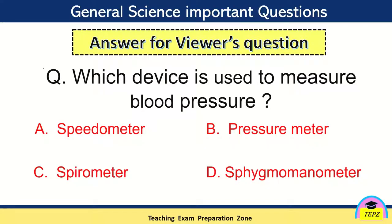Before that, we will see the answer for viewers' question which was asked in previous video. Which device is used to measure blood pressure? And the answer is option D, sphygmomanometer. Which device is used to measure blood pressure or BP? The answer is sphygmomanometer.